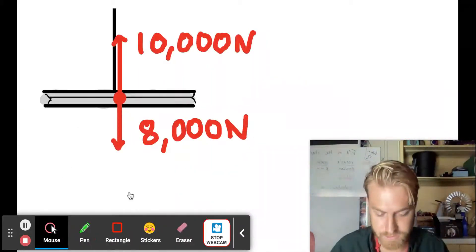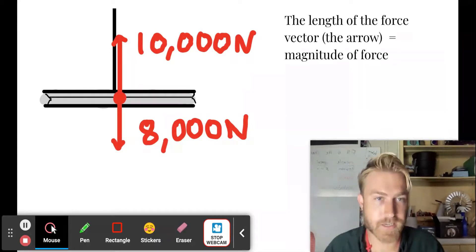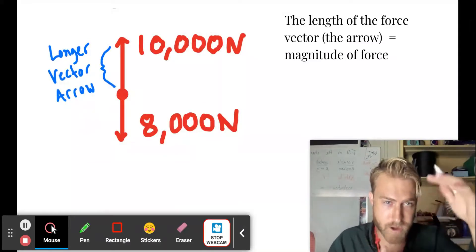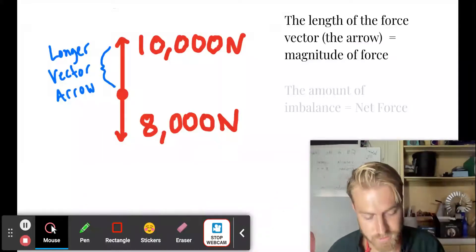So here it is here, a little bit zoomed in. The length of the force vector shows the magnitude of force, meaning the amount. So the longer the vector arrow, the more force, the more force.